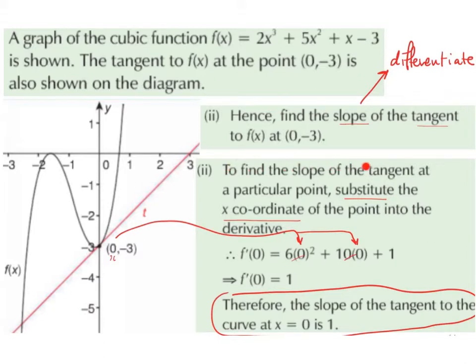So to find the slope of the tangent at a particular point, we substitute the x-coordinate of the point into the derivative. So it is very, very important that we sub in the x-coordinate to the derivative, not the original function. So, we found the derivative to be 6x² + 10x + 1 in part 1 of the question. So now we need to substitute 0 in place of the x in each term. And we are subbing in 0, because 0 is the x-value in the coordinate (0, -3). We do not sub in the y-value.